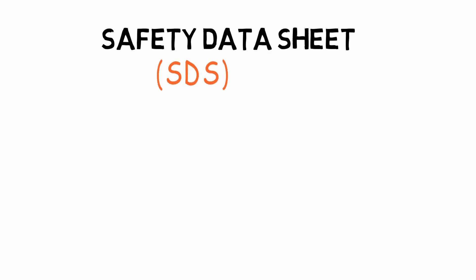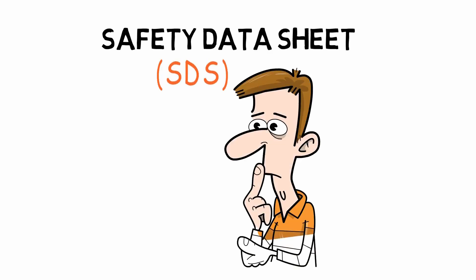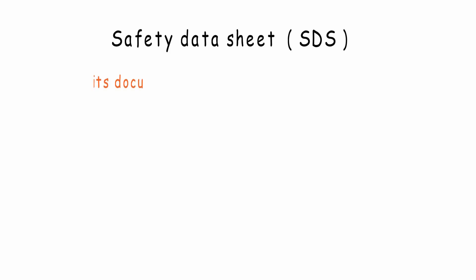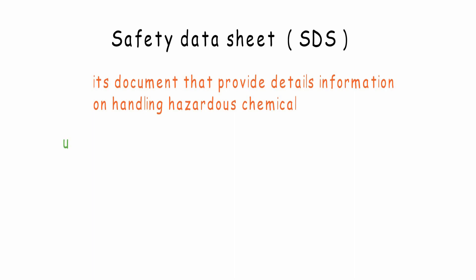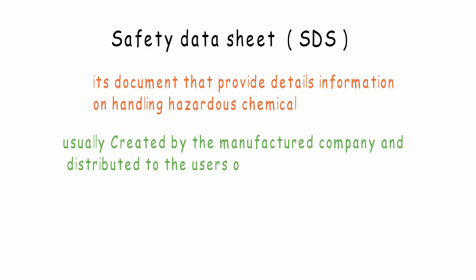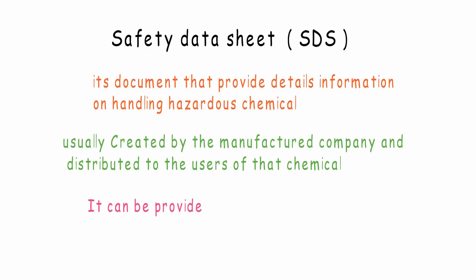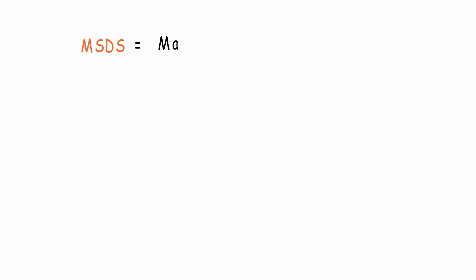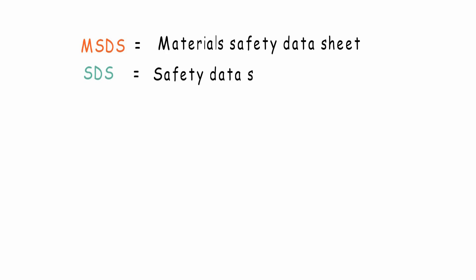Greetings everyone and welcome to this video about Safety Data Sheet. Safety Data Sheet is a document that provides detailed information on handling hazardous chemicals, usually created by the manufacturer and distributed to users. It can be provided as hard copies or soft copies. Before, it was known as MSDS — Material Safety Data Sheet — and now it is SDS — Safety Data Sheet.